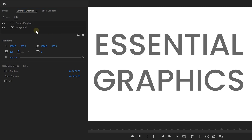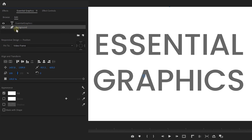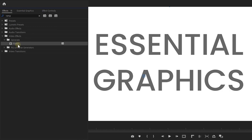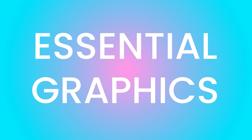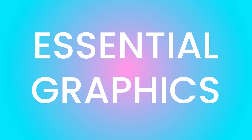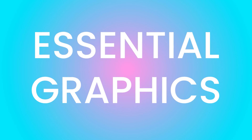Now let's continue with tip number 4. I've got a background rectangle in my Essential Graphics but I'd like to add some kind of gradient fill to it. It's not possible through the styling options, so what we can do is locate the ramp effect in the effects library and drag that to the Essential Graphics. This does allow me to create that beautiful gradient color.